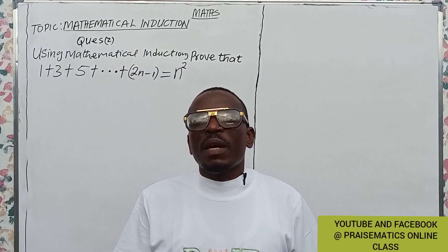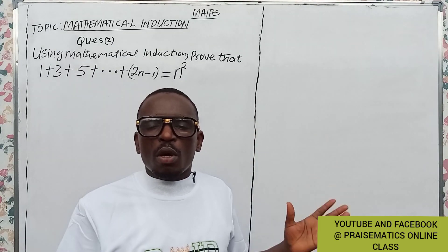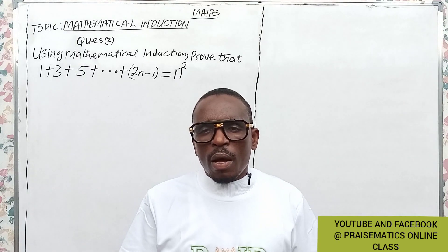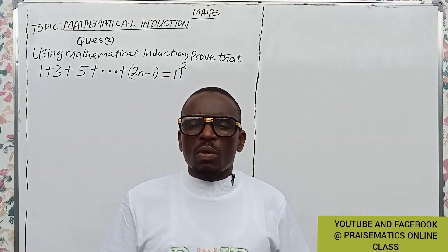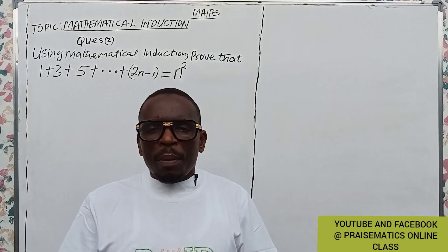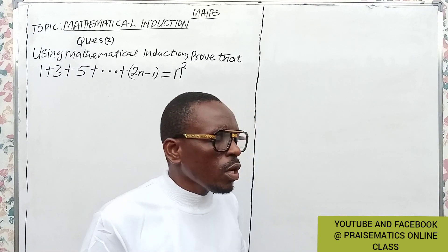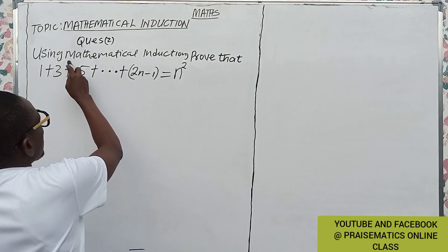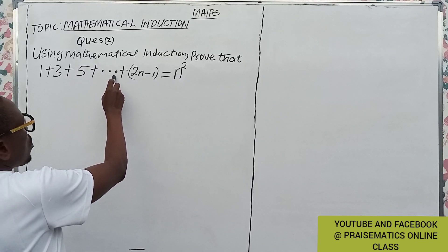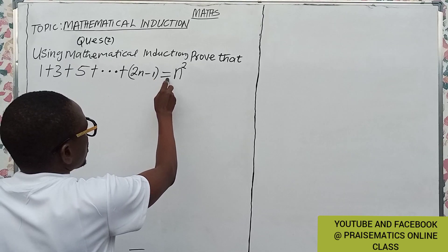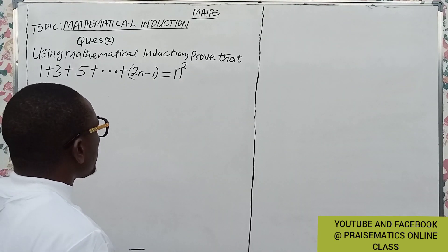Hello friends, welcome to Prismatic Online Class. In today's class we are going to look at our topic on board called mathematical induction. In our previous class we explained the principle of mathematical induction and its application in everyday life, but today we are going to solve another example. The question says: using mathematical induction, prove that 1 + 3 + 5 + ... + (2n - 1) = n². Now we need to test the solution.